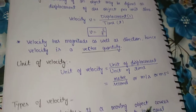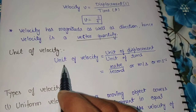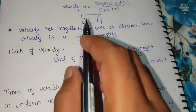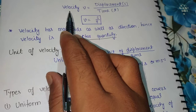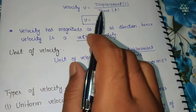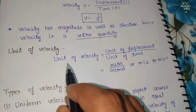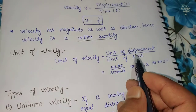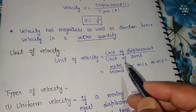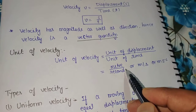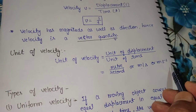Now, what is the unit of velocity? The formula for velocity is: velocity equals displacement upon time. Therefore, the unit of velocity equals unit of displacement upon unit of time, which is meter per second. This can be written as m/s or meter second inverse.